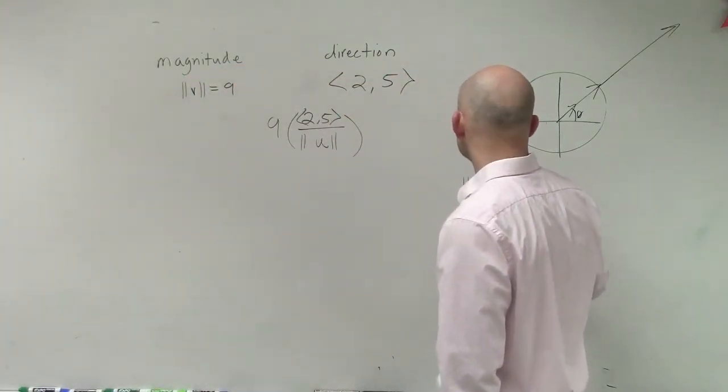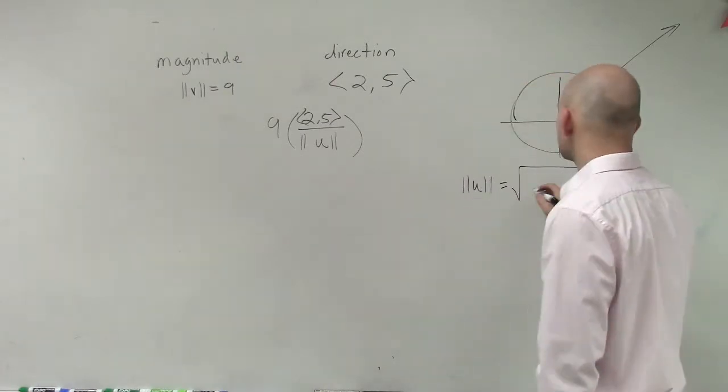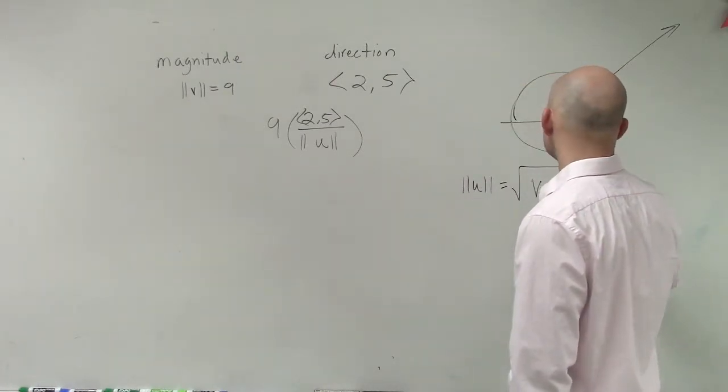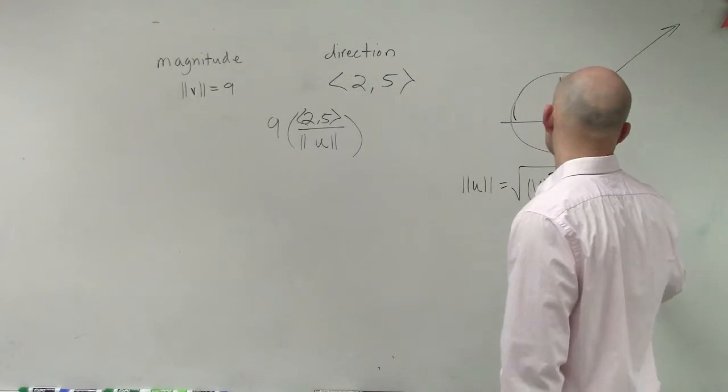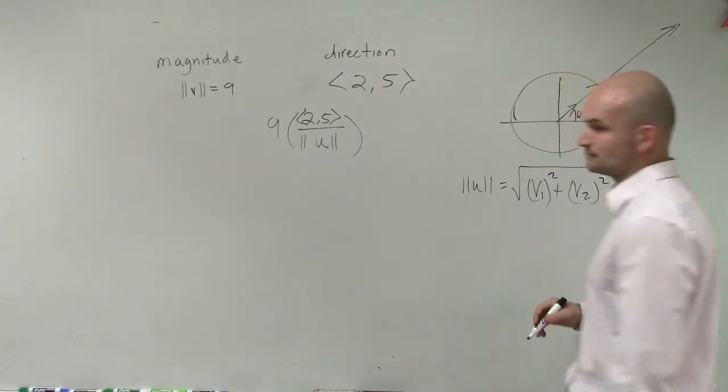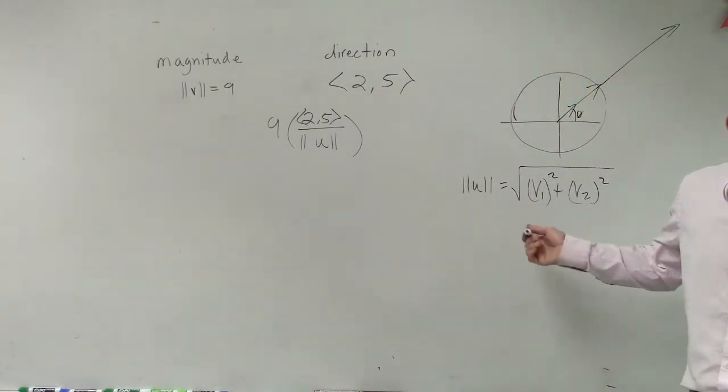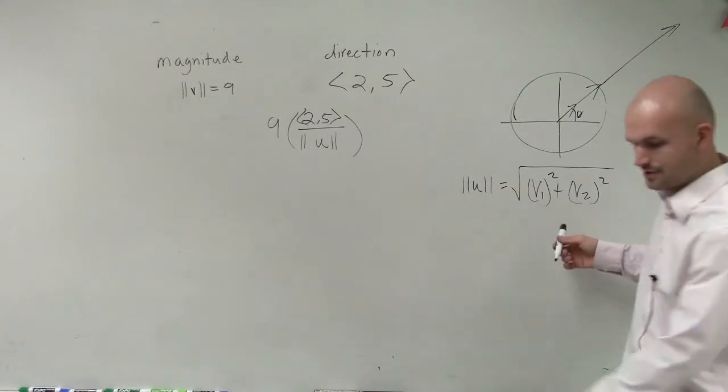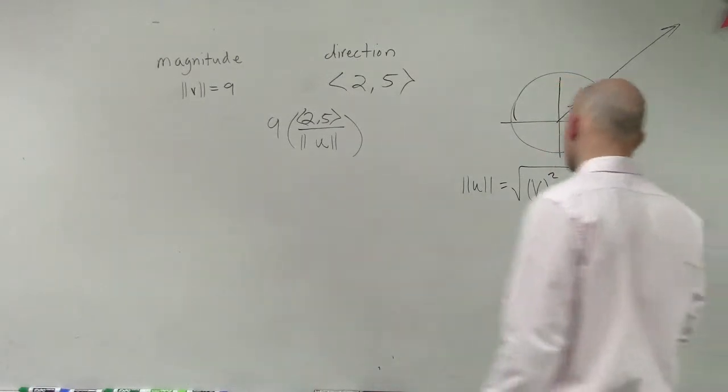Then what I'm going to do with that unit vector is I'm going to multiply it by the magnitude of 9. So we know that the vector u is 2 comma 5. Now I simply need to do is find what the magnitude is. This is in your formulas in your notes that you forgot last time, Kalen. So now you can just rewrite it down for you.